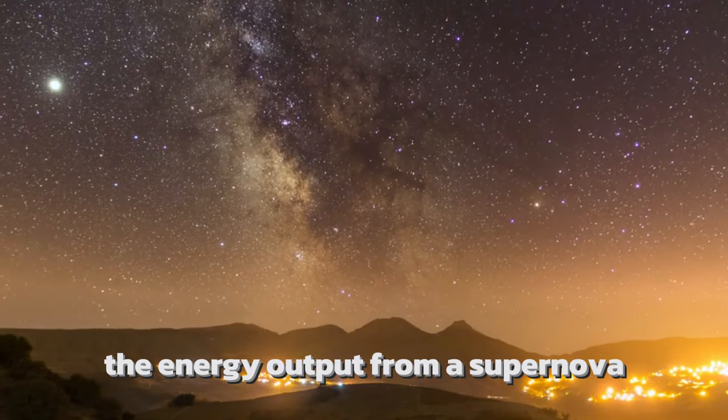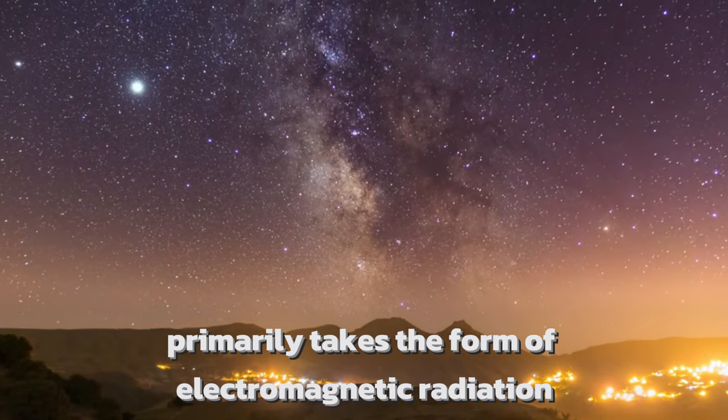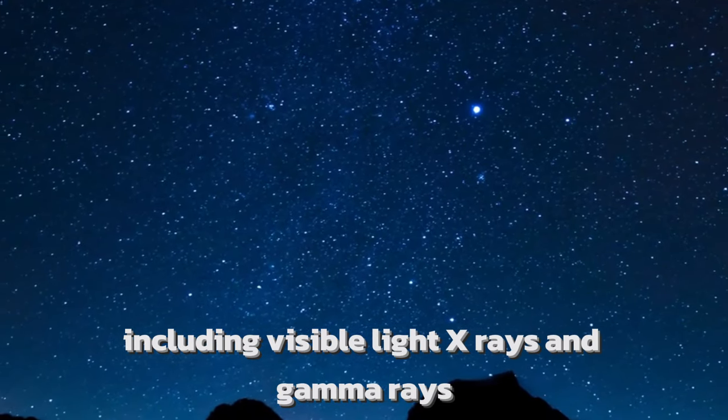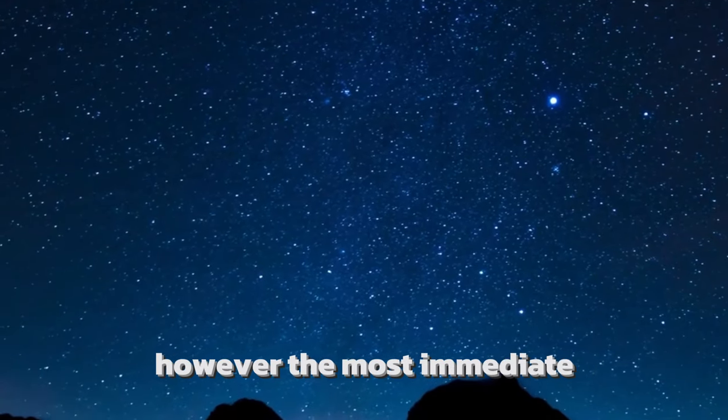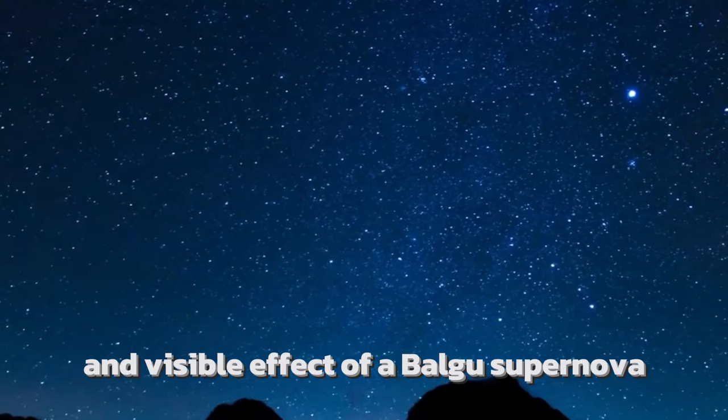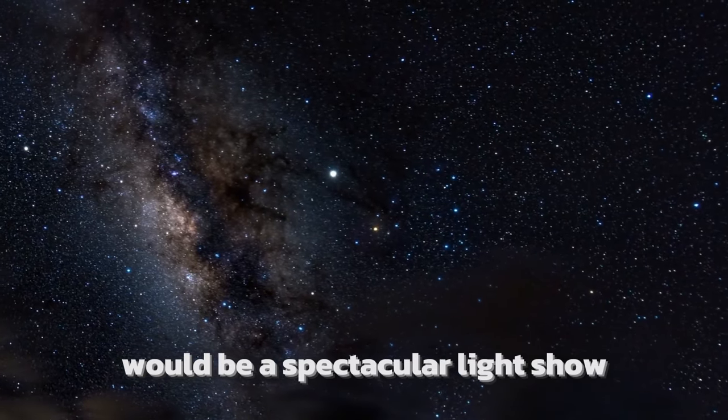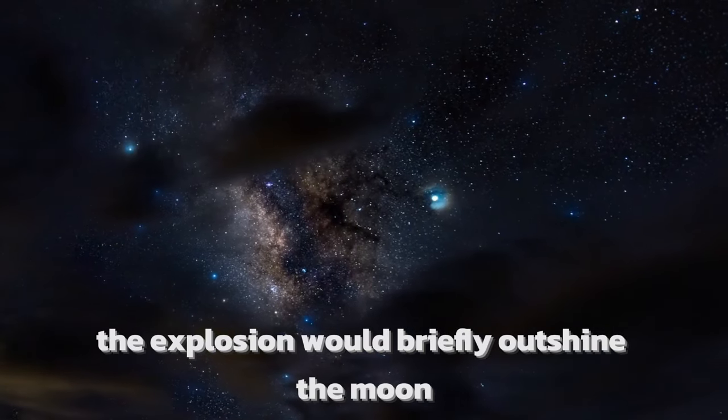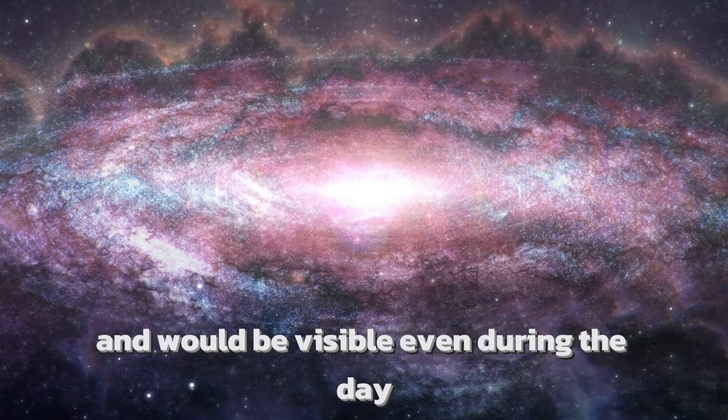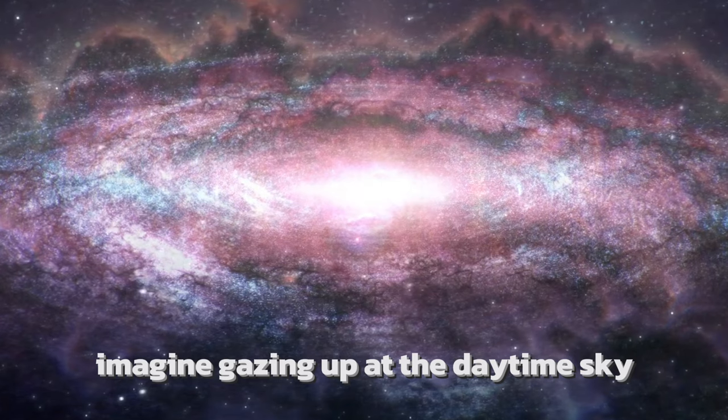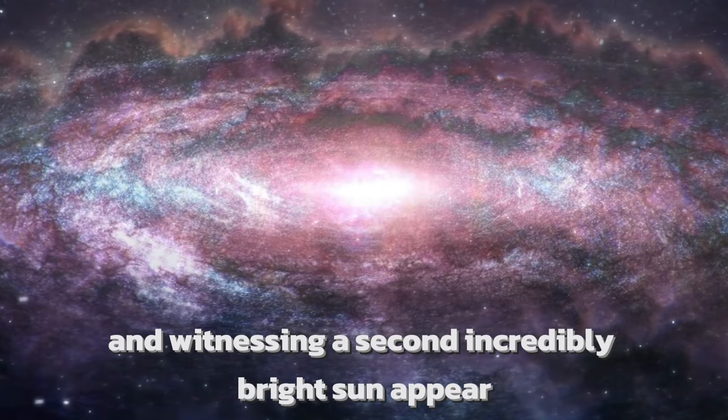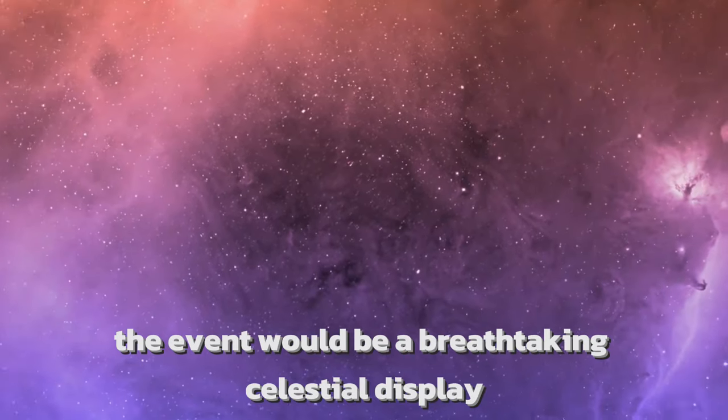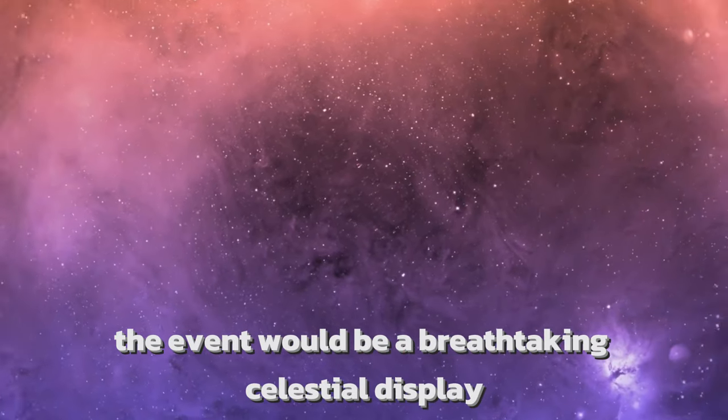The energy output from a supernova primarily takes the form of electromagnetic radiation, including visible light, X-rays and gamma rays. However, the most immediate and visible effect of a Betelgeuse supernova would be a spectacular light show in our night sky. The explosion would briefly outshine the moon and would be visible even during the day. Imagine gazing up at the daytime sky and witnessing a second incredibly bright sun appear for a few weeks or even months. The event would be a breathtaking celestial display, captivating astronomers and stargazers alike.